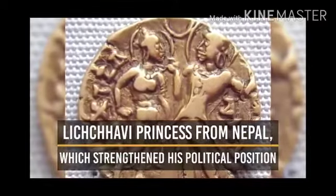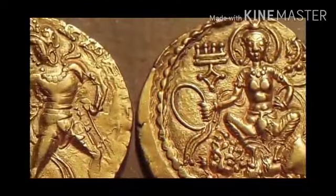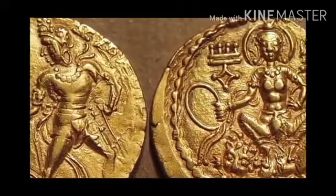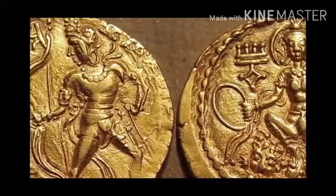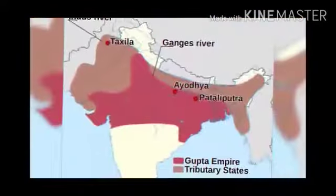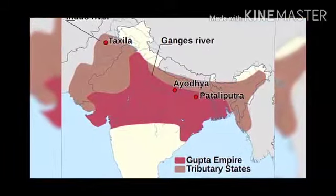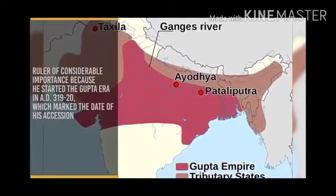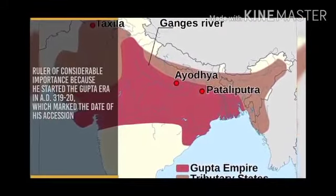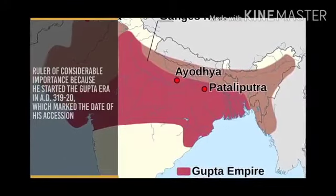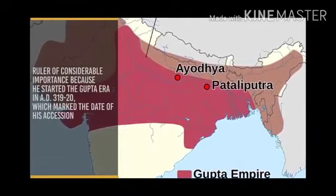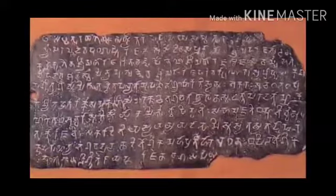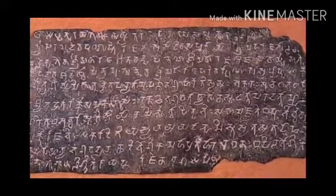He married a Lichavi princess from Nepal, which strengthened his political position. Later he implemented various policies in the minting of different coins. He was a ruler of considerable importance because he started the Gupta era in AD 319-320, which marked a very important historical event.